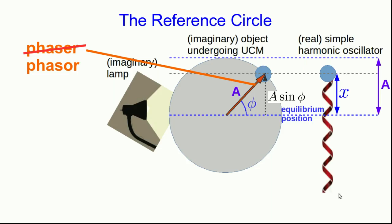In the last lecture, we found that a simple harmonic oscillator follows the motion of an object undergoing uniform circular motion. We can define a reference circle of radius equal to the amplitude of the simple harmonic oscillator, and the tip of an arrow we call the phasor follows that object. The position of the object is always equal to A sine phi, where phi is the phase.